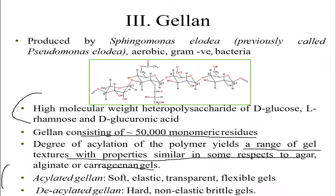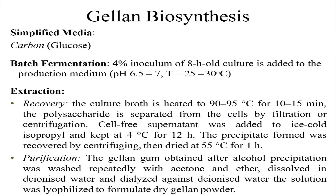Gellan can exist as acylated or deacylated forms, producing either flexible or brittle gels depending on the type. These are high molecular weight compounds involved in gel formation.